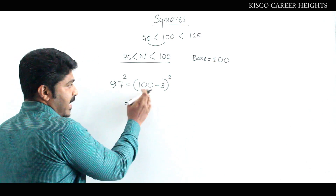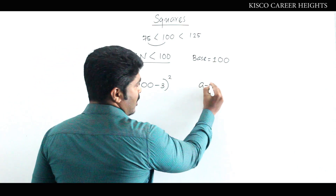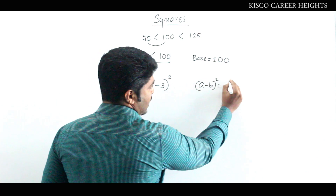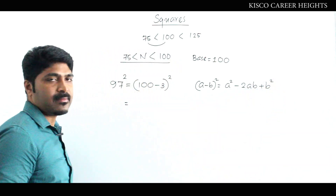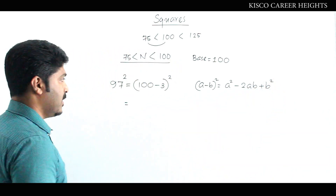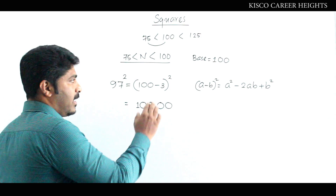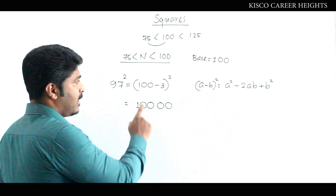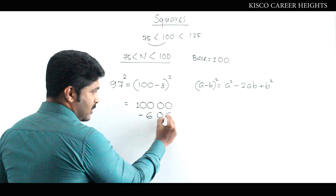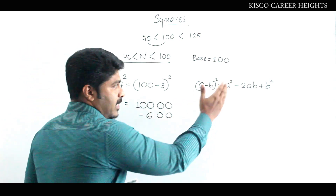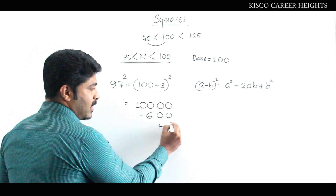We expand using A minus B the whole square. Here A is 100, so A² is 10,000. The second part, minus 2AB, gives minus 2 × 100 × 3, which equals minus 600. And the third part, plus B², where B is 3, gives plus 3 squared, which is plus 9.